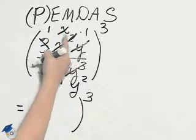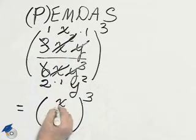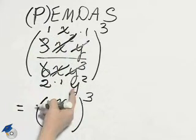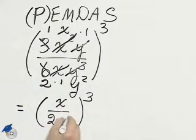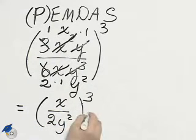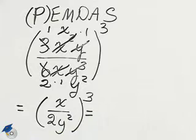Within the parentheses, 1 times x times 1 is x. 2 times 1 times y squared, 2y squared. Finish with the power rule.